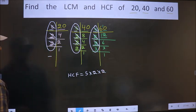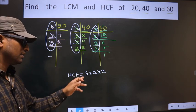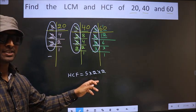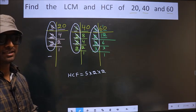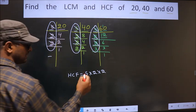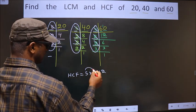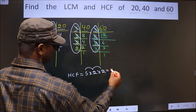No more numbers are left. Therefore, now you multiply these numbers. Whatever number you get, that is your HCF. That is 5 times 2 is 10, 10 times 2 is 20.